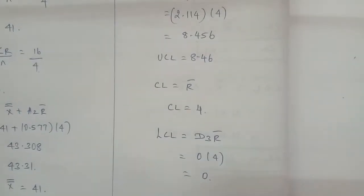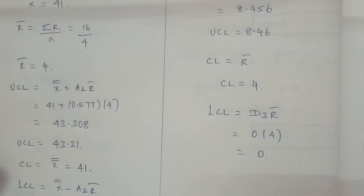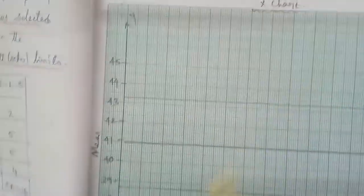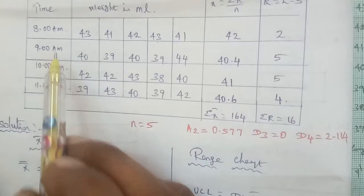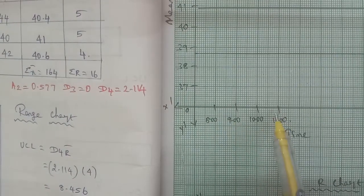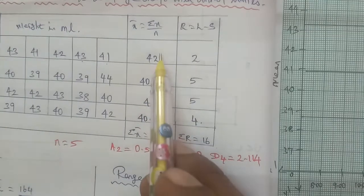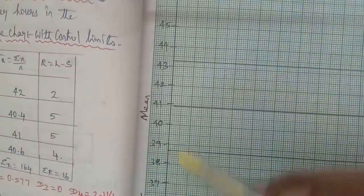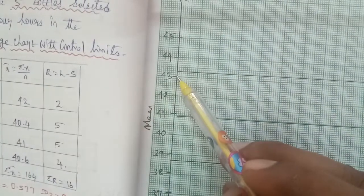Now we draw the x-bar chart. On the x-axis we plot the time: 8am, 9am, 10am, and 11am. On the y-axis we plot the x-bar values, selecting the range from 37 to 44 to cover the data. The upper control line is drawn at 43.31 across all four time points.